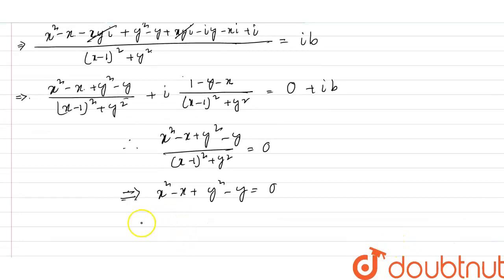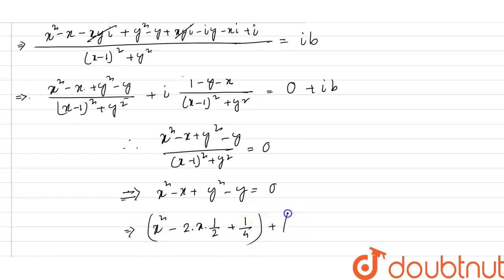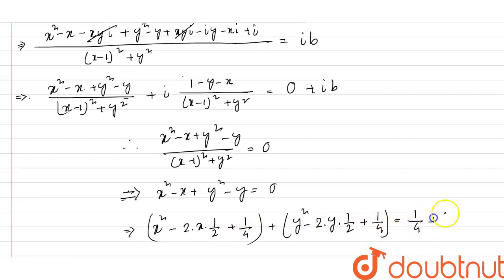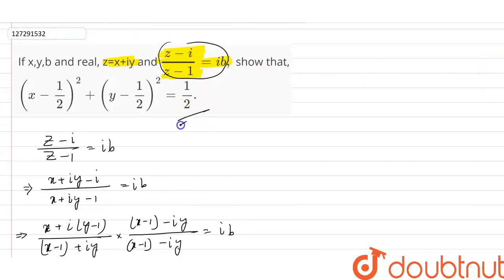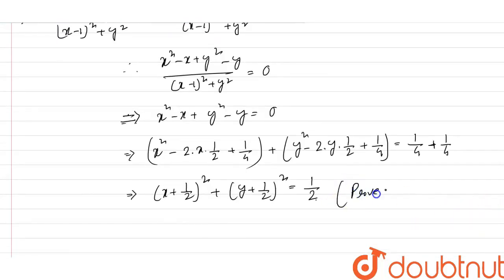Here we complete the square: x squared minus x becomes (x minus half) whole square minus 1 by 4. Similarly y squared minus y becomes (y minus half) whole square minus 1 by 4. So (x minus half) whole square plus (y minus half) whole square equals 1 by 4 plus 1 by 4, which equals half. So proved.